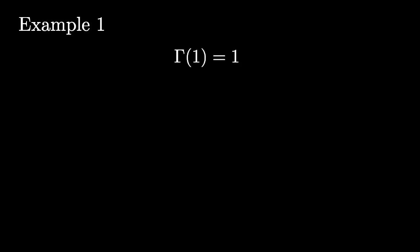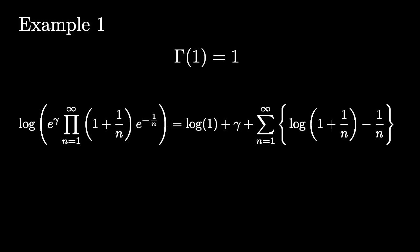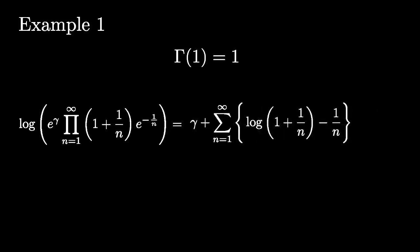We shall prove that gamma of 1 is equal to 1 by taking the log of the Weierstrass canonical form and plugging in the value Z equals 1. The log of 1 is equal to 0, and the sum on the right-hand side is equal to minus gamma.